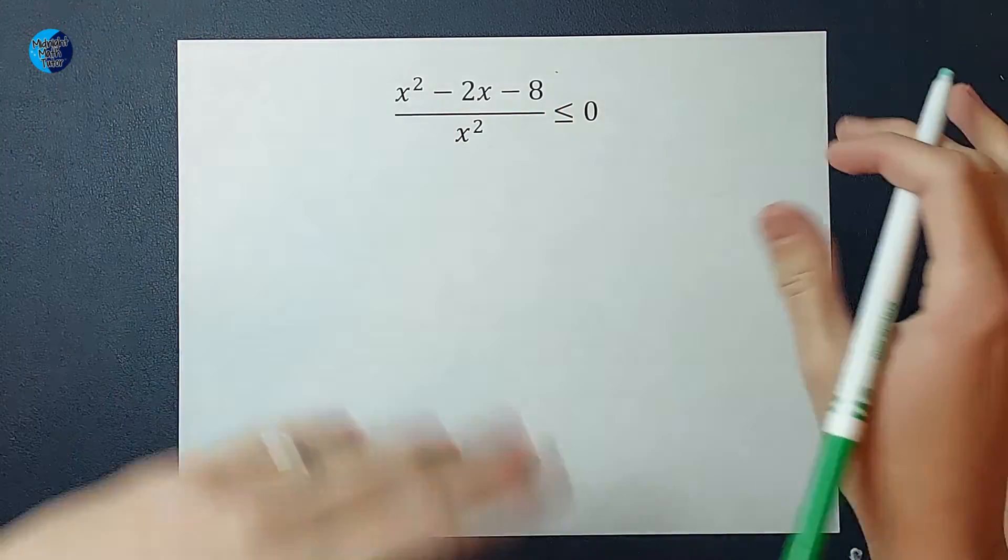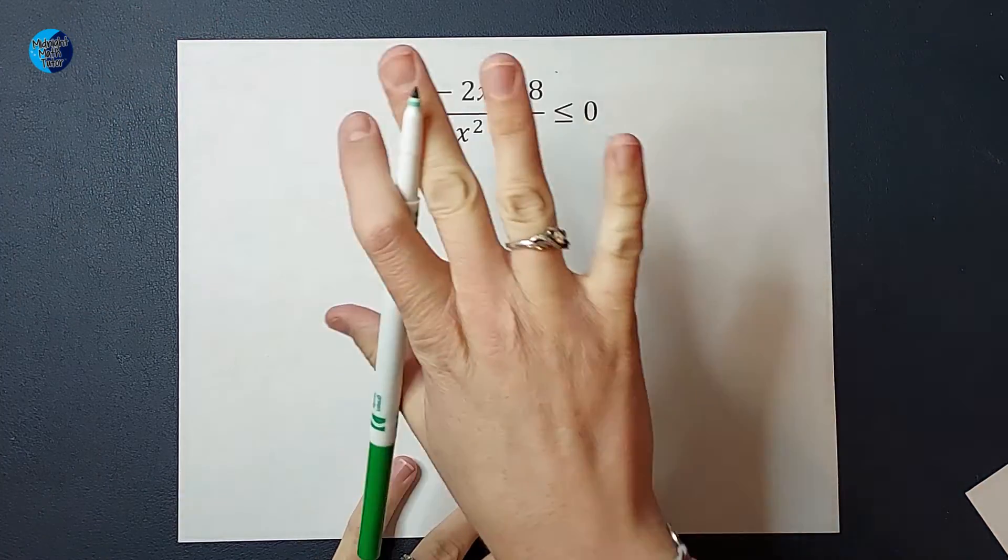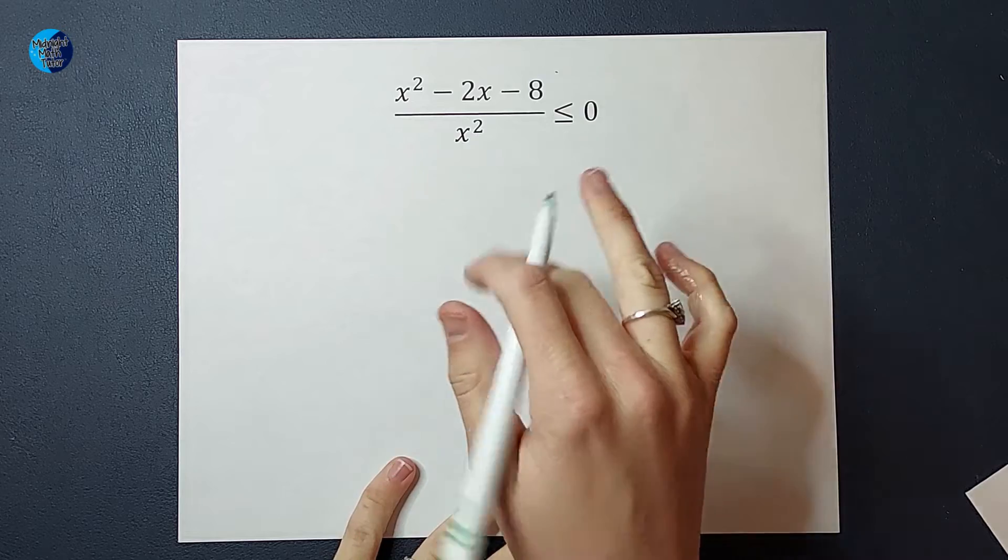Alright. So when we are solving these, it's easiest to solve them when we've got all our numbers, variables, everything on one side and zero on the other. So we're good here.